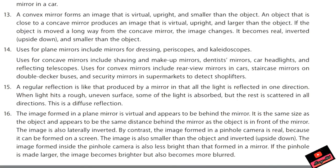The answer of question number 14 is: uses of plane mirror include mirrors for dressing, periscope, and kaleidoscope. Uses of concave mirror include shaving and makeup mirrors, dentist's mirror, car lights and others. Question number 15 is: a regular reflection is like that produced by a plane mirror in that all the light is reflected in one direction. When the light hits an uneven surface, some of the light is absorbed but rest of the light is scattered. That is why the reflection is diffuse reflection. Question number 16 answers: the image formed in a plane mirror is virtual, appears to be behind the mirror, it is the same size just like the object. You can pause this video, you can write the answer. Keep practicing hard because it is your final assessment.